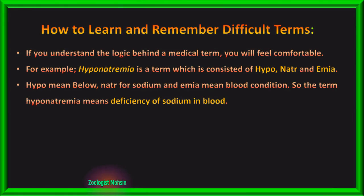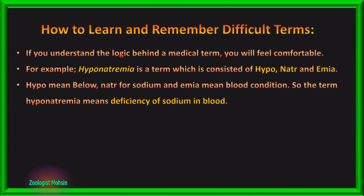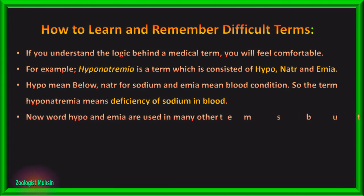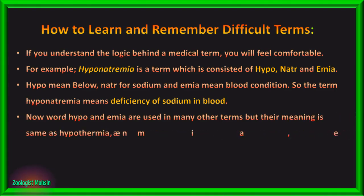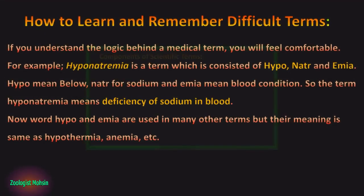Similarly, if you encounter other terms like this, you can split them into small root words and link the meanings with each other, so that in the future you may understand other terms using the same root words. For example, hypo and emia are used in many other terms with the same meanings, like hypothermia, anemia, etc.